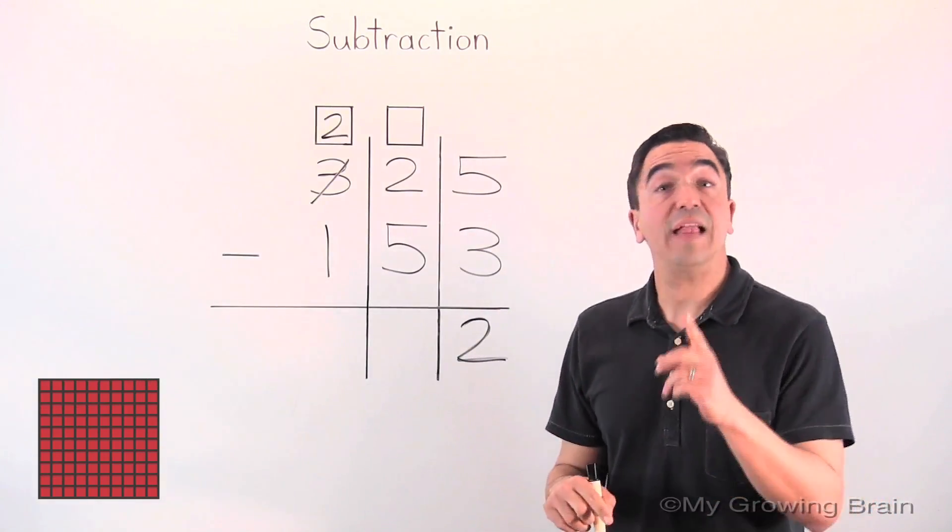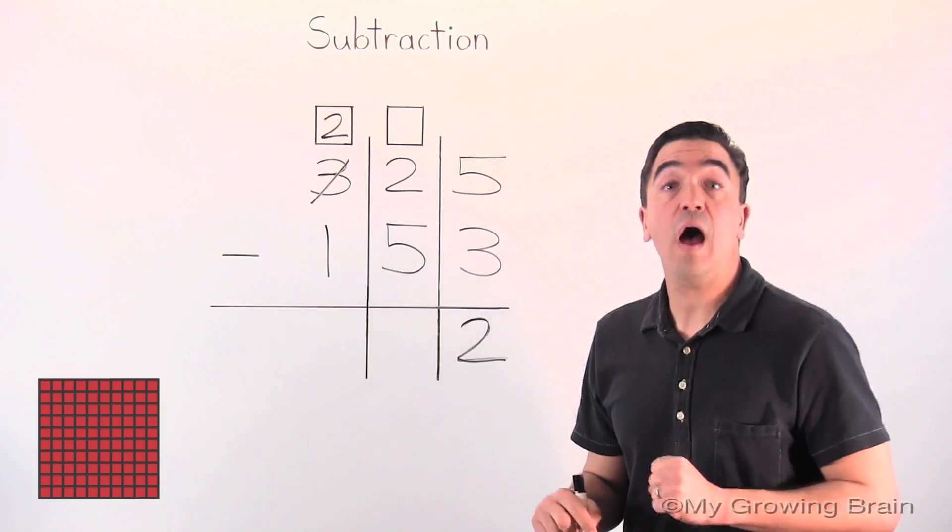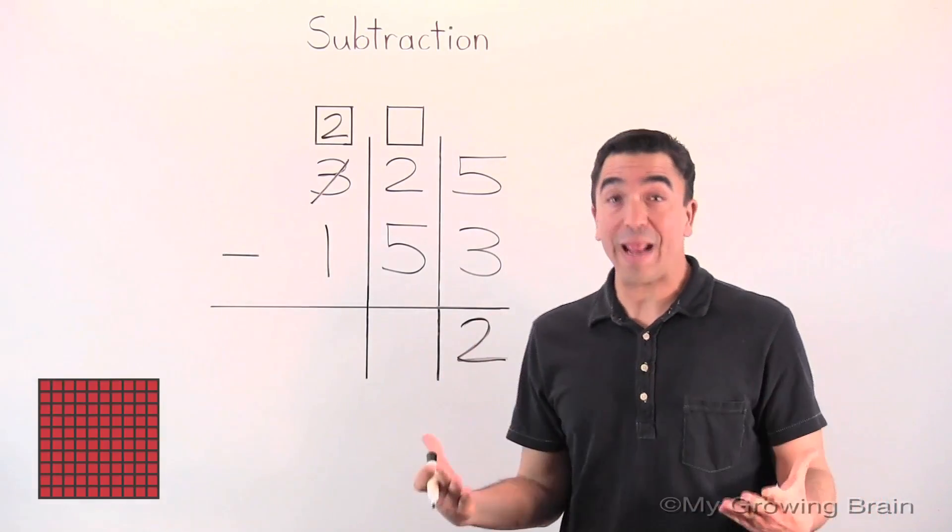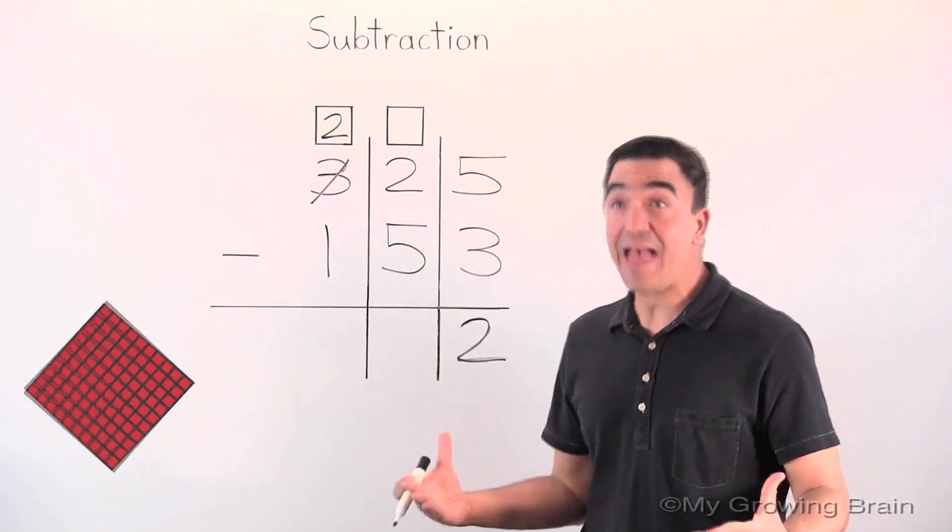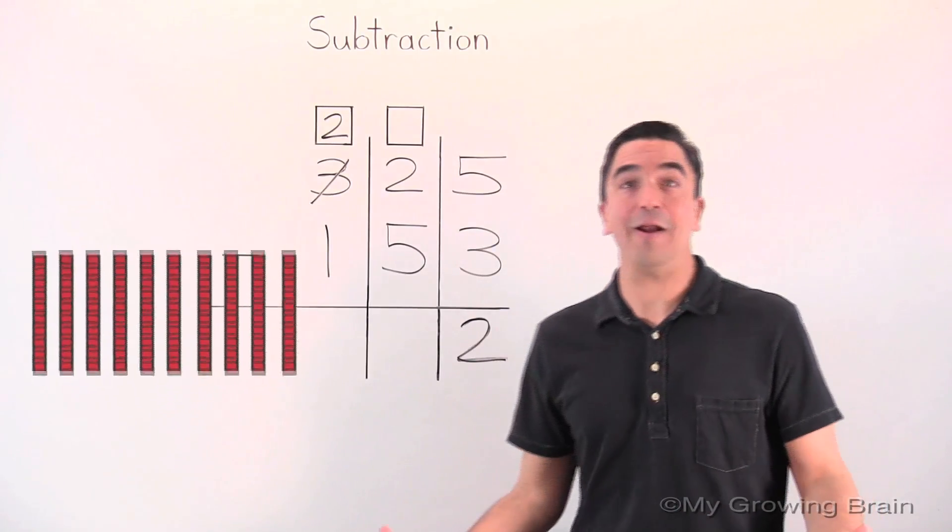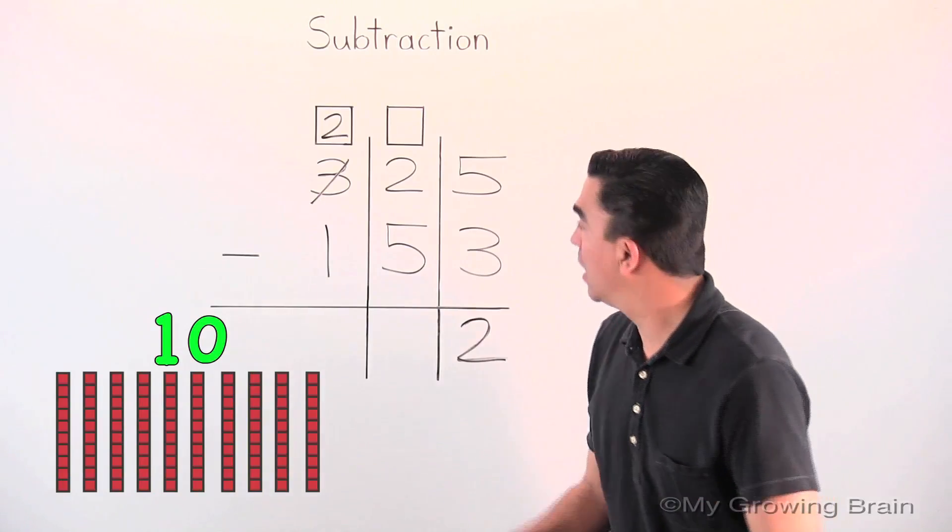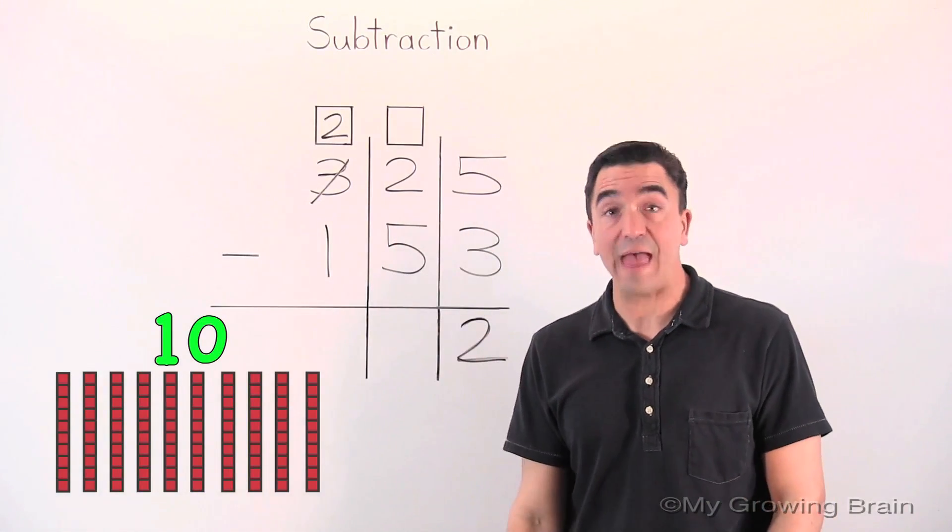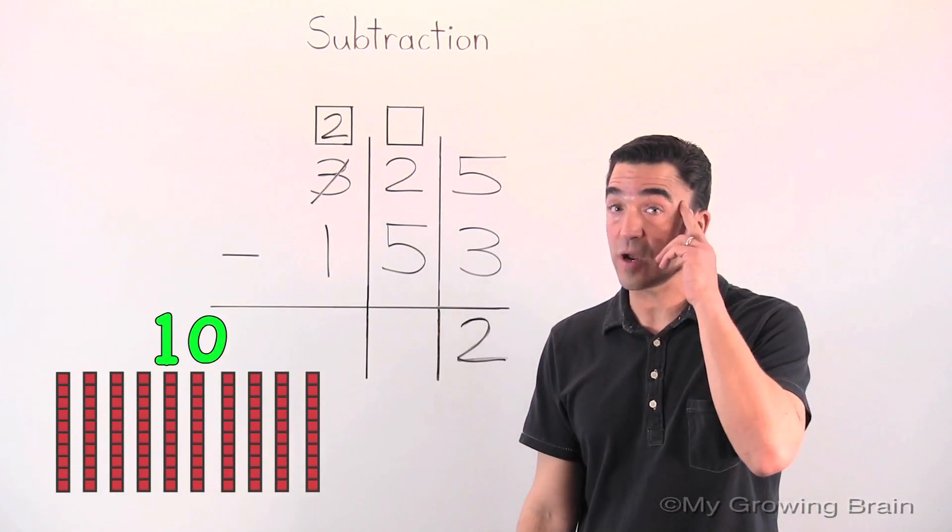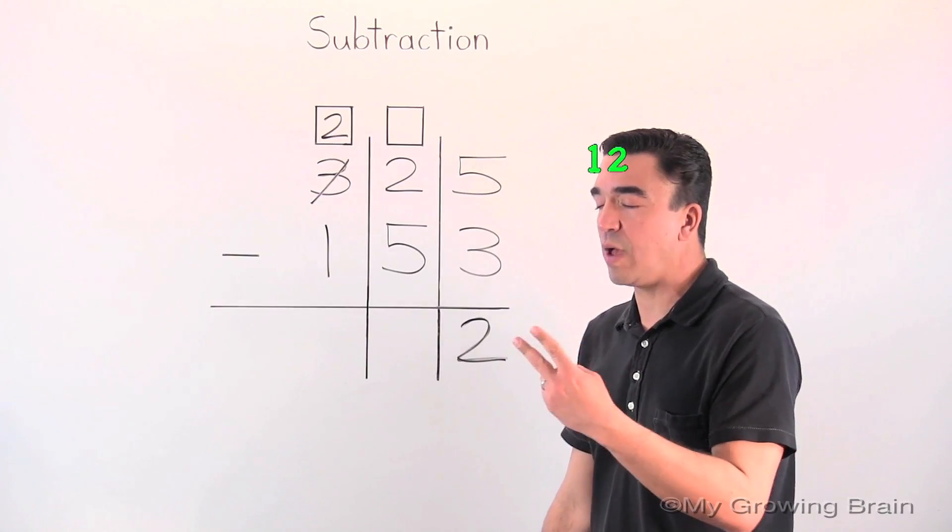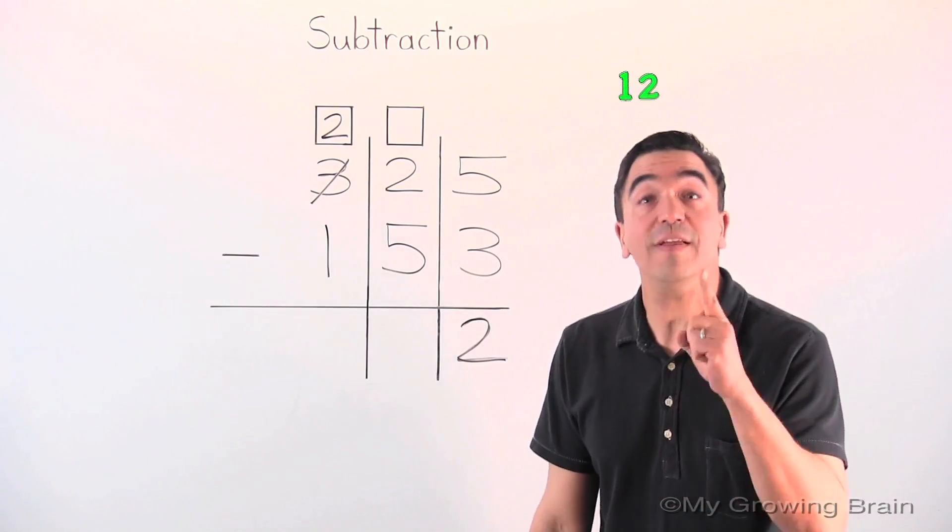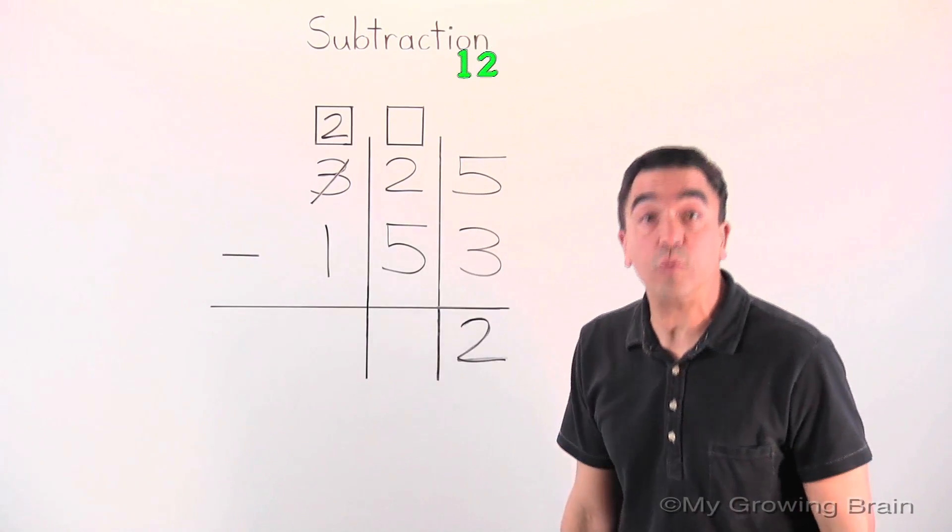Now, let's take our one hundred and break it into ten tens. There! All right. Now, ten tens plus two tens. Well, let's put ten in our head. Eleven, twelve. Twelve tens! Let's put that in the regrouping box.